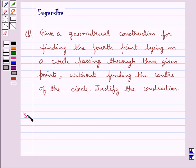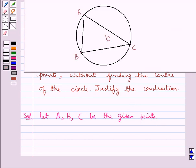Now let's move on to the solution. First we consider let A, B, C be the given points and these points A, B, C lie on the circle with center O. We need to locate a point, say point D, such that this point D also lies on the circle.